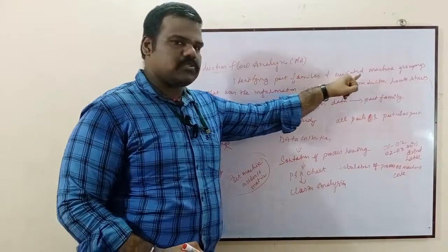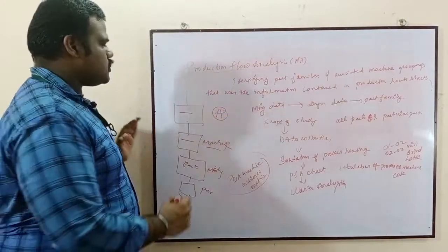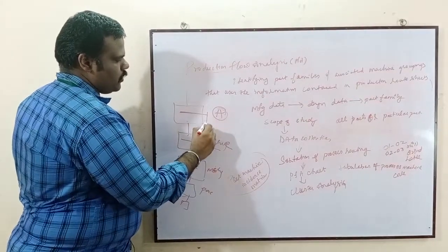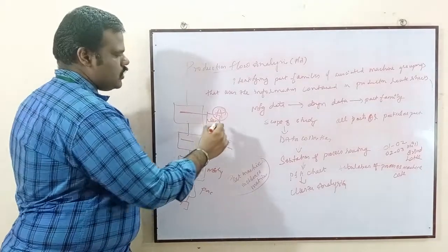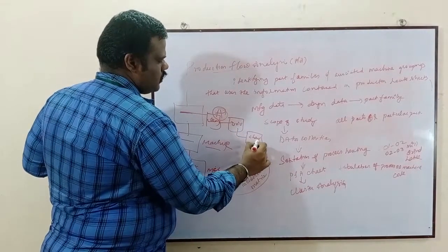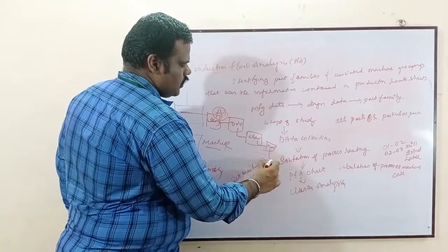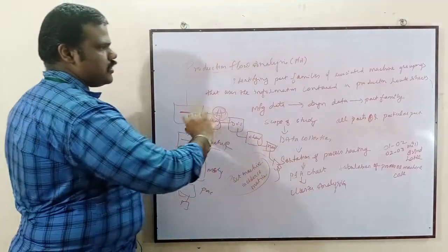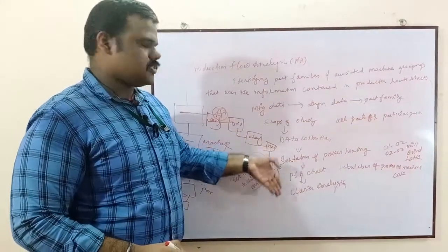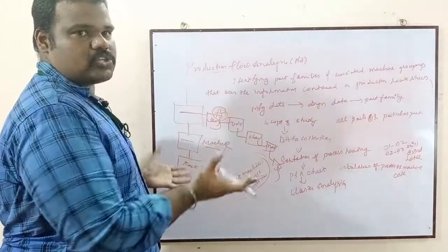Production flow analysis is about identifying part families and associated machine groupings that uses the information contained in a production route sheet. For example, if I am producing a product A, first there will be cleaning, then drilling, then chamfering, then milling, then threading or grooving, and so on. This is the production route sheet — I could be producing five or six products, with holes or without holes.